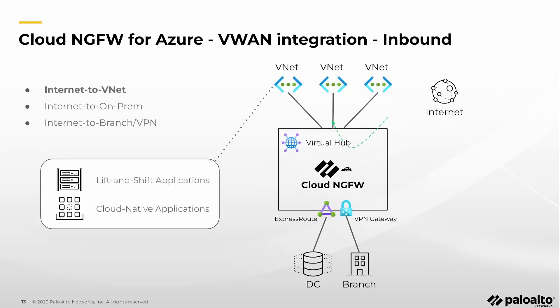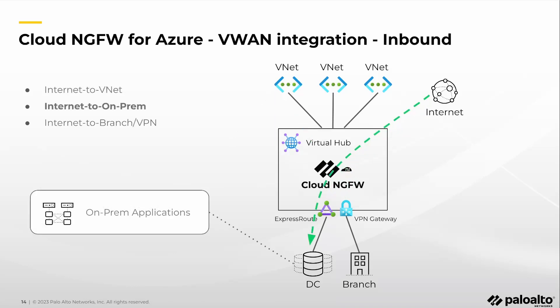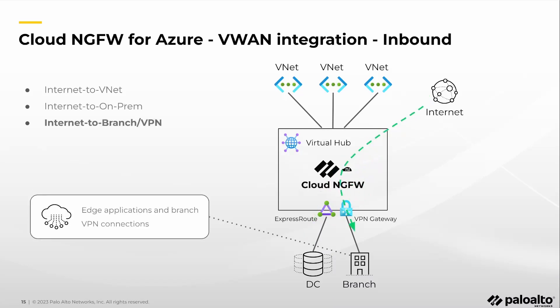You are able to expose applications to external users and partners by configuring the corresponding NAT rules and security policies. While using a CDN or WAF for the incoming web traffic is a common security option, there are still lots of applications using non-HTTP protocols. Cloud NGFW for Azure can be configured to secure and scan all incoming traffic and pass it to the virtual hub to route it to the destination VNet, data center, or VPN connection.